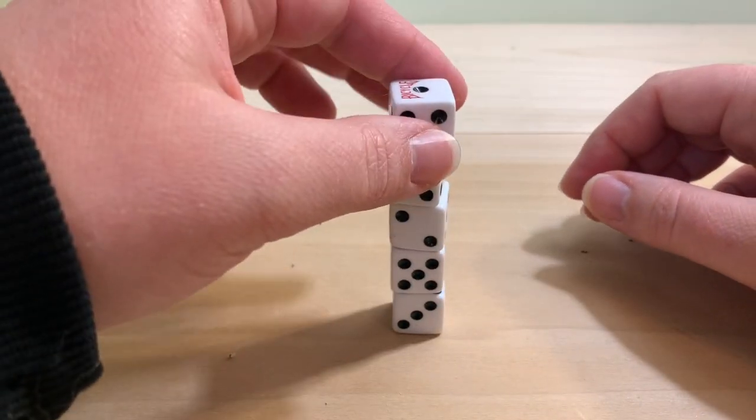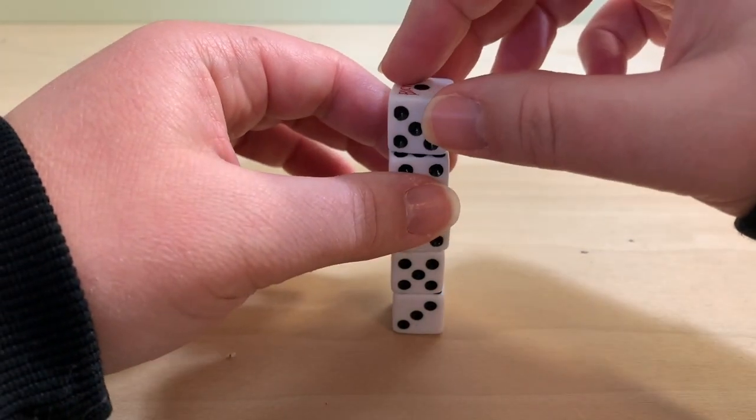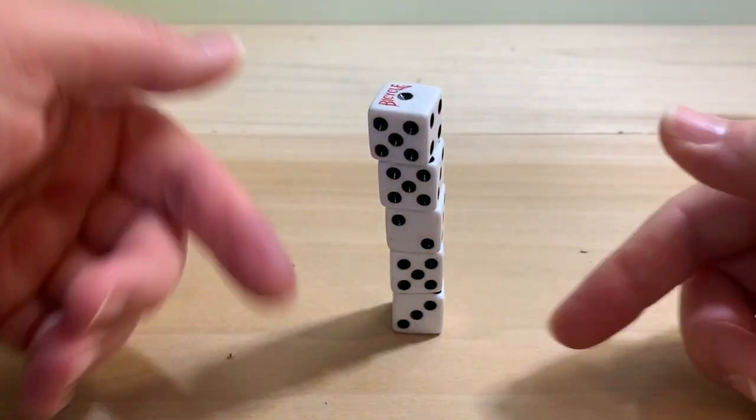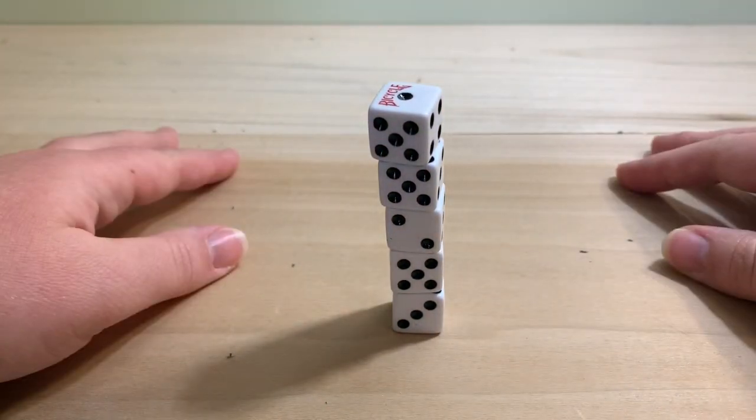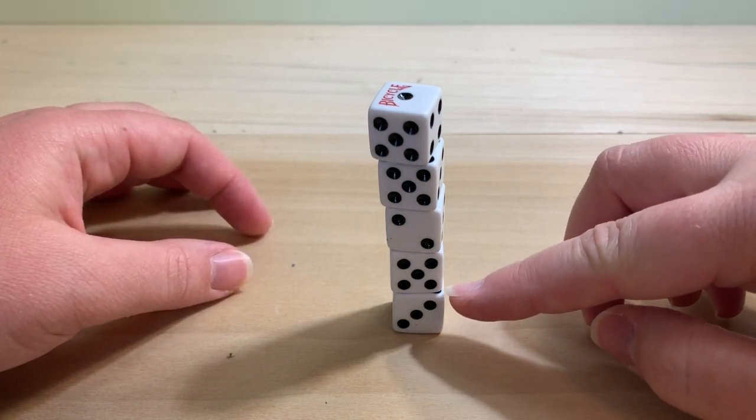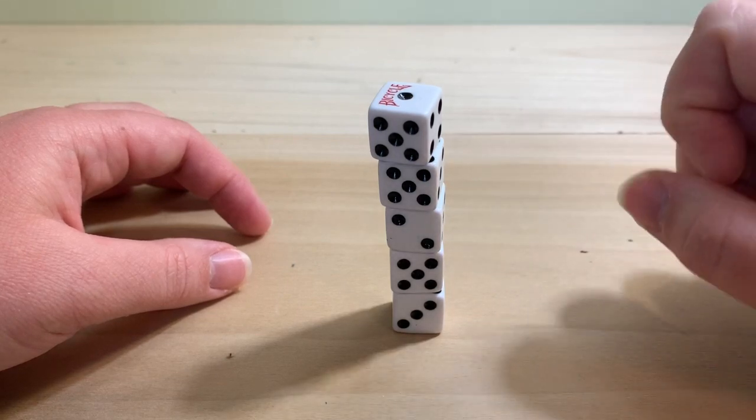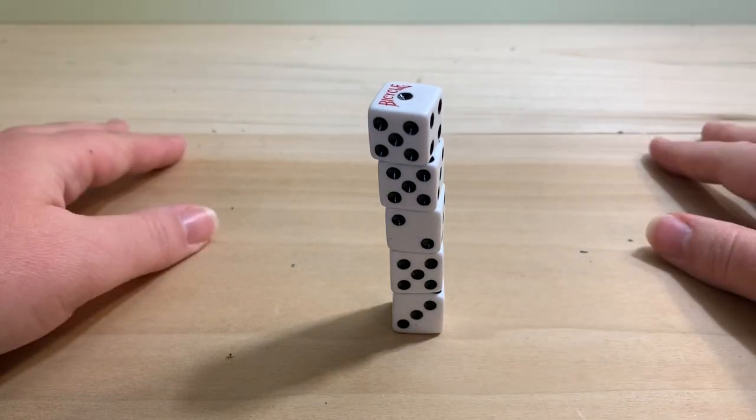Once I stack all these dice on top of one another, you tell your friend, 'I'm going to tell you right now that looking at all these faces, I know that the dice faces we can't see—the one here and the one above it, all the way up our stack—is going to equal 34.'